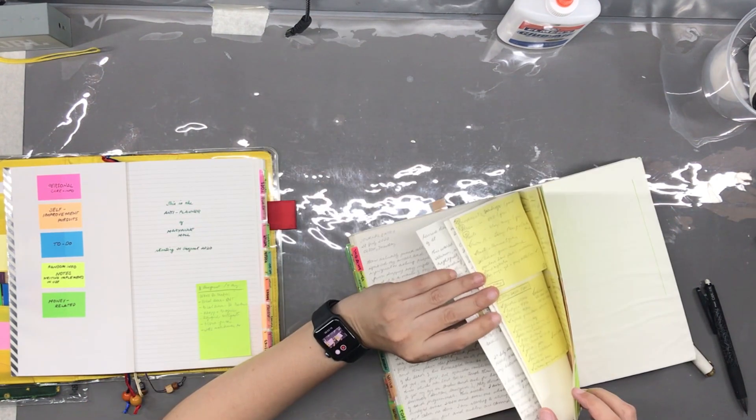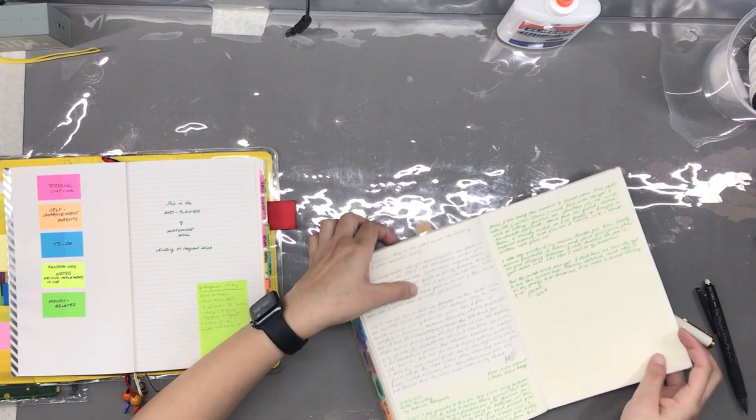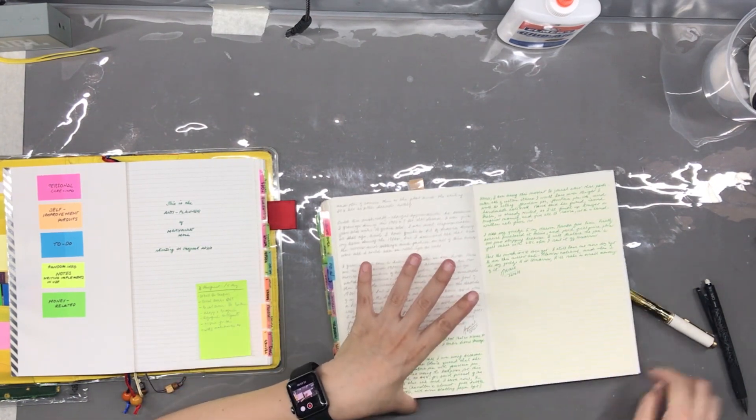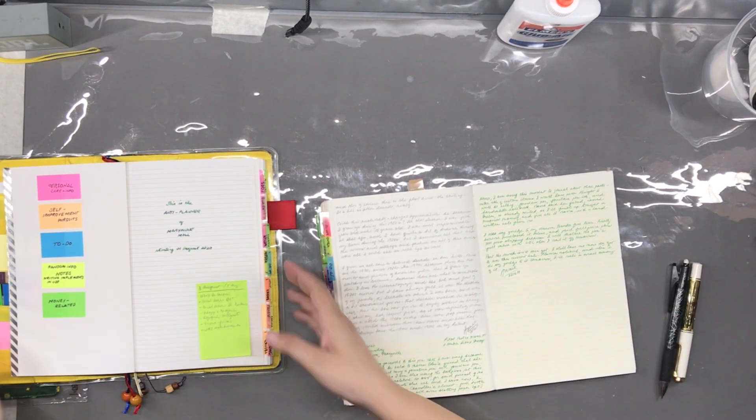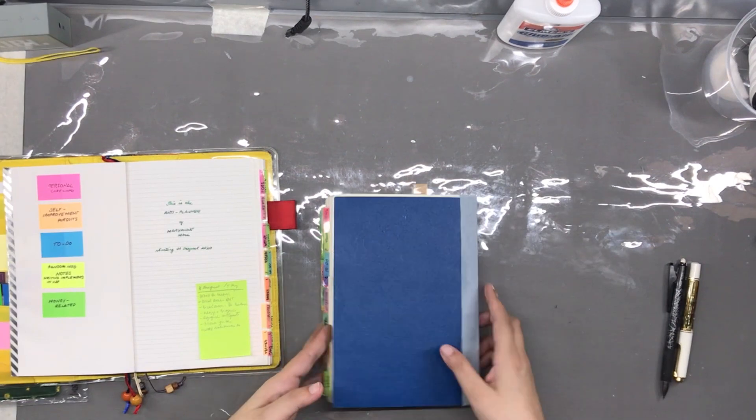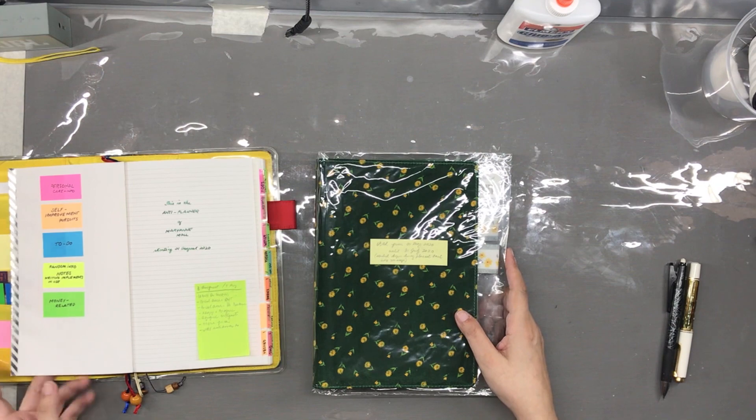I still have some space left at the end of this notebook to journal in and later on that same day I did write a journal entry saying goodbye to this notebook that has served me well for the past three months. I'm really excited to continue my journey of my unplanned life using the anti-planner for the next, I don't really know how many months.